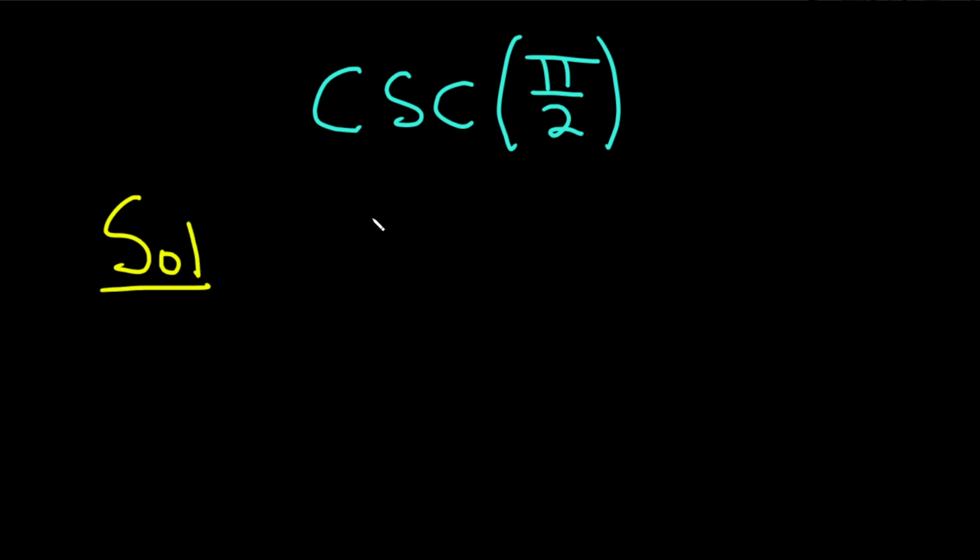So first, recall that the cosecant of x is equal to 1 divided by the sine of x.